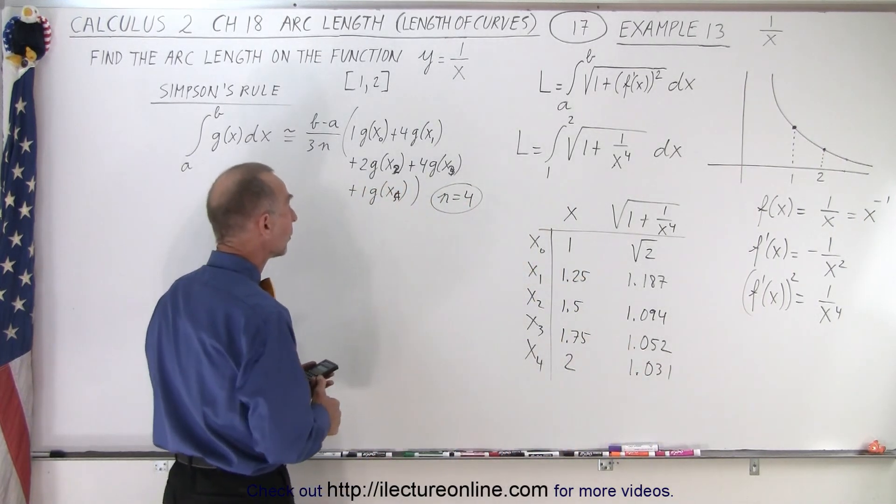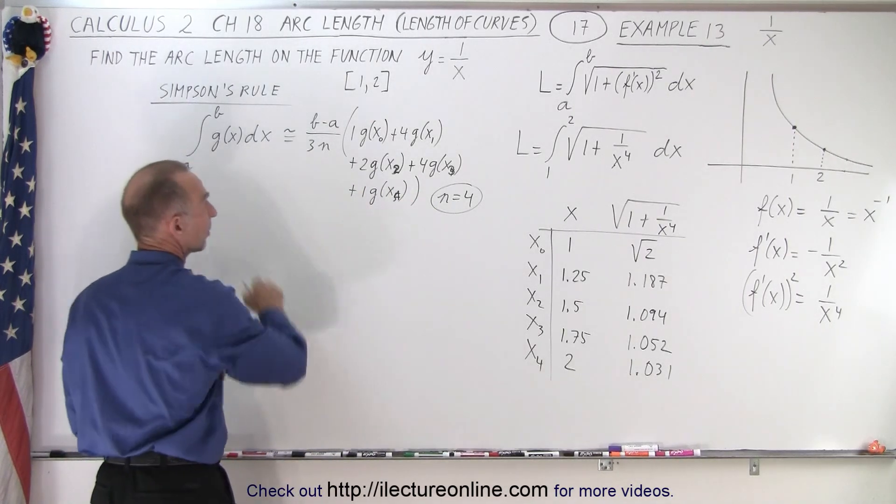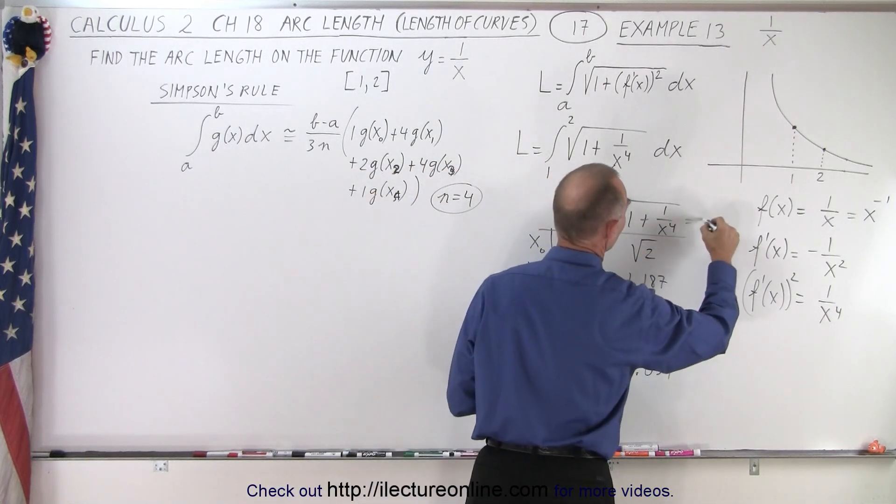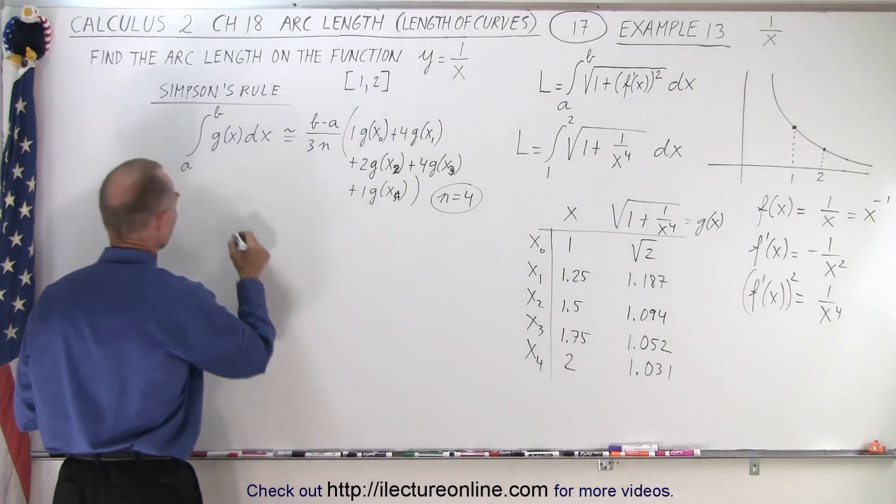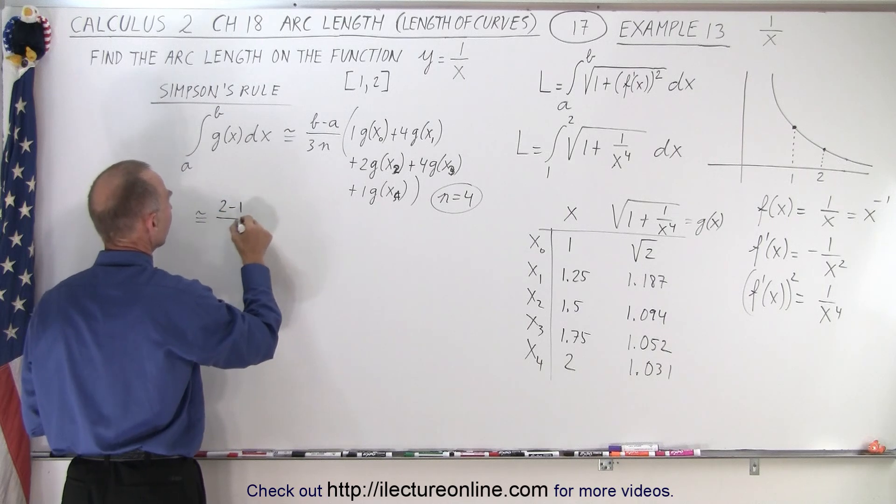Now, what we need to do is plug that into our rule right here. Notice that g of x is going to be this quantity right here. So call this g of x. And now we're going to evaluate it. So this is approximately equal to b minus a. That would be 2 minus 1 divided by 3 times. There's 4 segments.